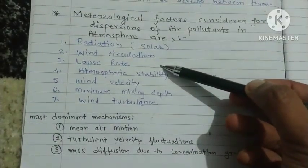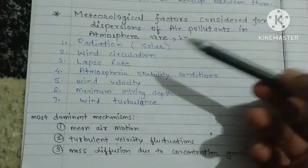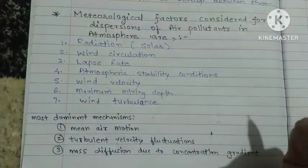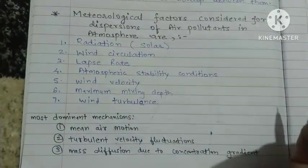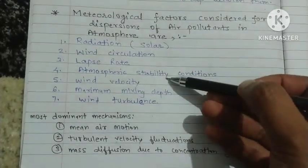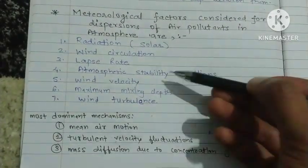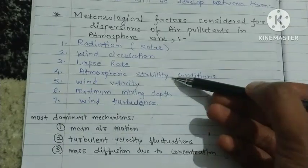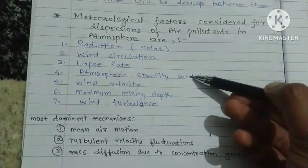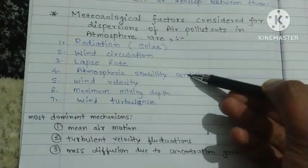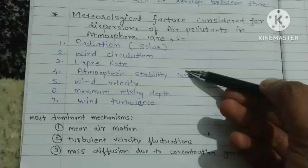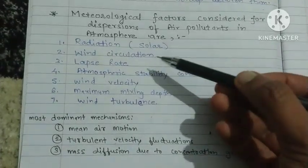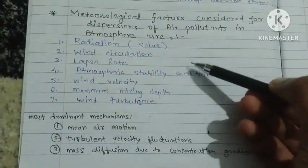The third point is lapse rate. Lapse rate is nothing but the temperature difference with respect to altitude. The fourth factor that affects the dispersion of air pollutants is the atmospheric stability conditions. There are three conditions, and we will cover those in the next lecture.